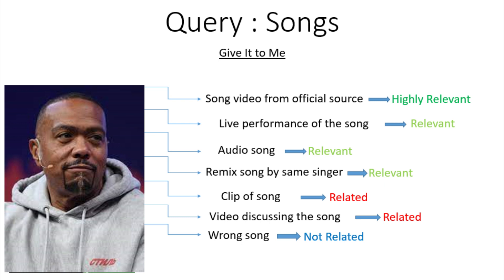If the video result is a clip or portion of a song but not a full song, you will choose the related label. Or if the video result is a video discussing the song, you will also choose the related option. If the video result is a wrong song, even if it is sung by the same singer, you will choose not related.